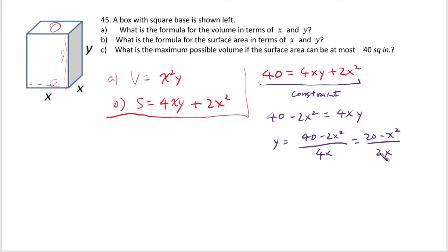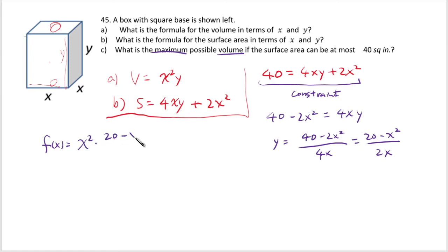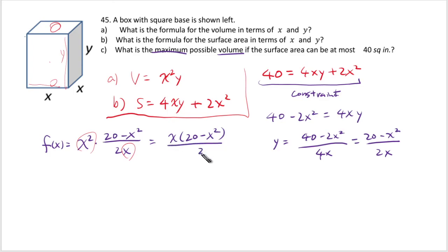Now plug y into the target function V = x²y. Replacing y gives f(x) = x² · (20 − x²)/(2x). Since x² divided by x cancels one x, we get f(x) = x(20 − x²)/2. That is the volume as a function of a single variable x, and we're trying to find its maximum.